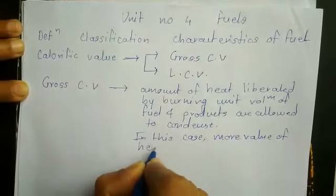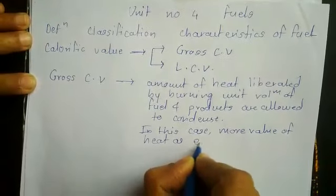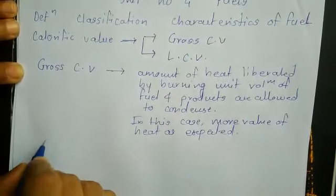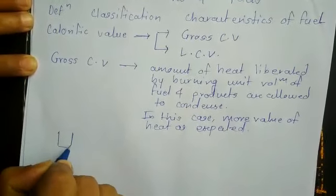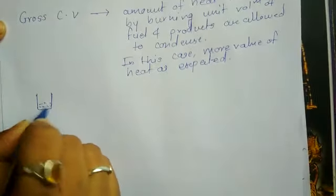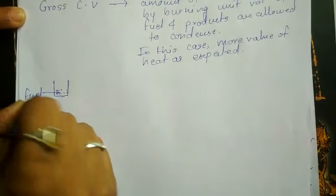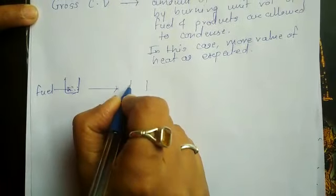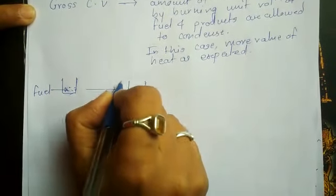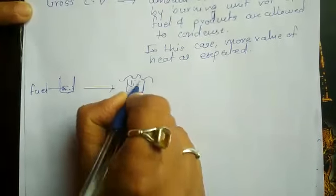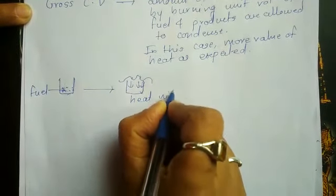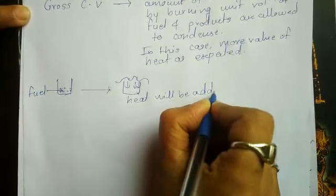In this crucible, if we heat known weight of fuel, then if we condense the product, heat will be added and ultimately we get additional amount of heat. That is called as gross calorific value or high calorific value.